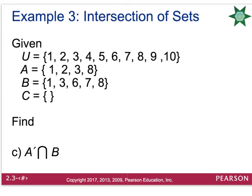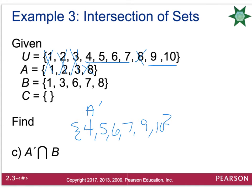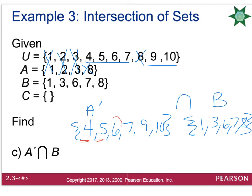I could also ask you to find the complement of A, intersection B. It's a good idea to first figure out what the complement of A is. The complement of A is any number in the universal set that's not in set A, so we can't use 1, 2, 3, or 8. The complement of A would be {4, 5, 6, 7, 9, 10}. We want to intersect this with set B, which is {1, 3, 6, 7, 8}. Looking at what these two sets have in common: there's a 6 in both and a 7 in both. So the result is {6, 7}.